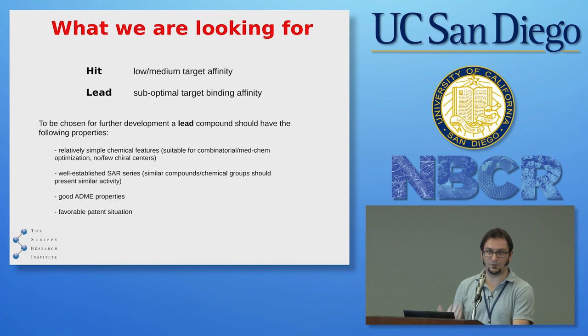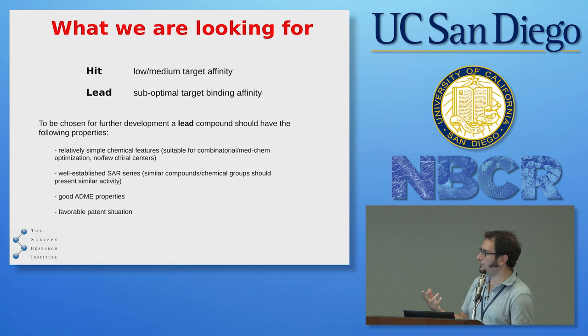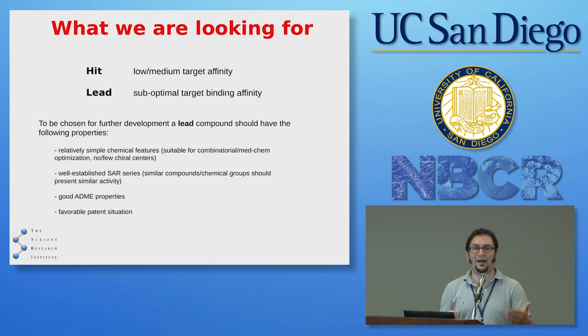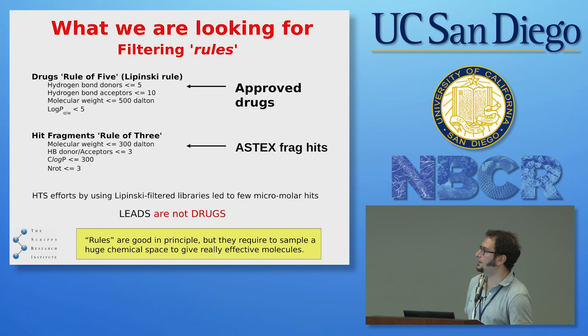Ideally you want to find more than one molecule binding in the same site to be sure your prediction is right. Of course it needs to have good ADME properties — it's hard to handle this at the very beginning but it's doable with filters. If you want to develop something new — even in academia — you want something favorable in terms of patents. If a molecule was found ten years ago and already patented by a company, there's no point in rediscovering it.